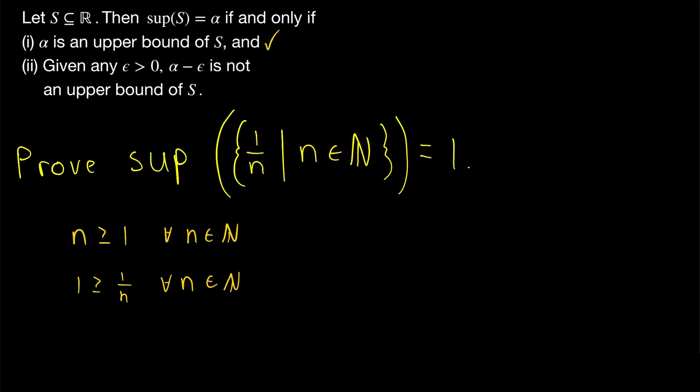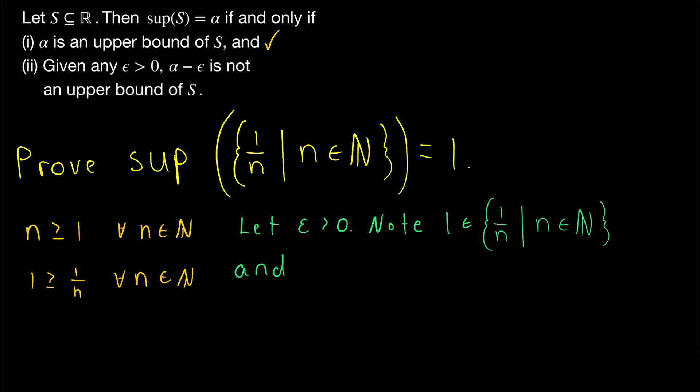All that remains is to show that for any epsilon greater than 0, 1 minus epsilon is not an upper bound of our set, and that couldn't be easier. So we say, let epsilon be greater than 0. Note that 1 is an element of our set. When n is equal to 1, that gives us the element 1 over 1, which is 1. And what's the last important detail? Since epsilon is positive, 1 minus epsilon is certainly less than 1. And that means that 1 minus epsilon is not an upper bound of our set, which is what we wanted to prove, because it's less than 1, which is an element of our set. Thus 1 minus epsilon is not an upper bound.